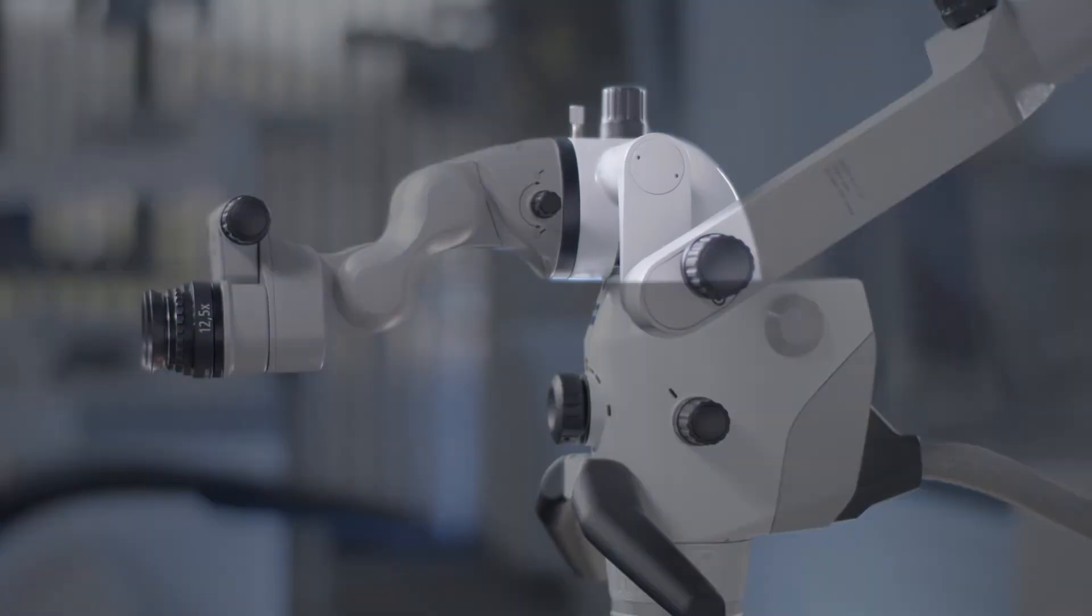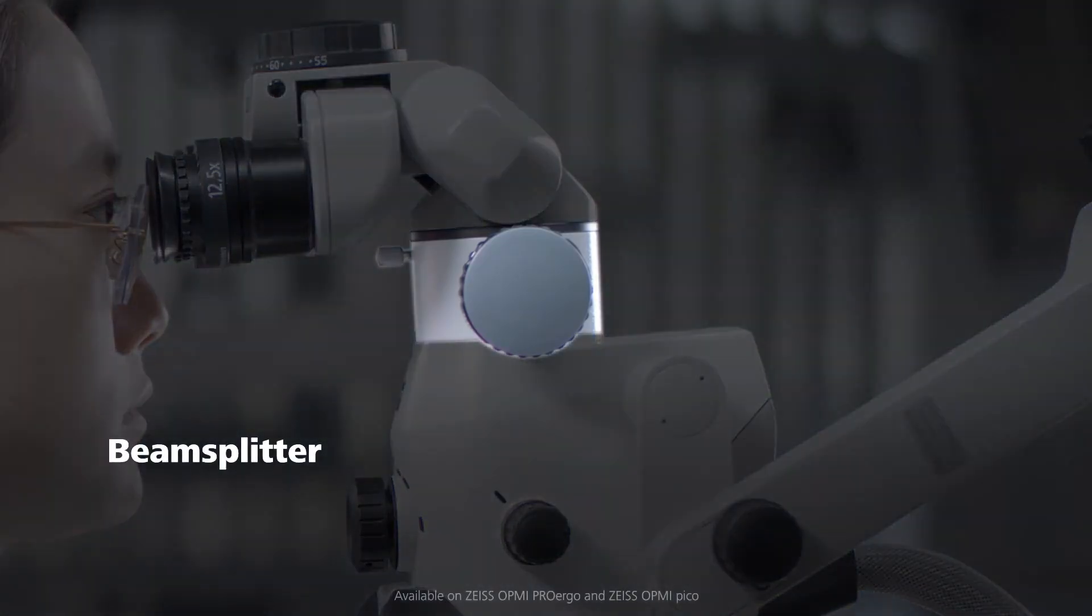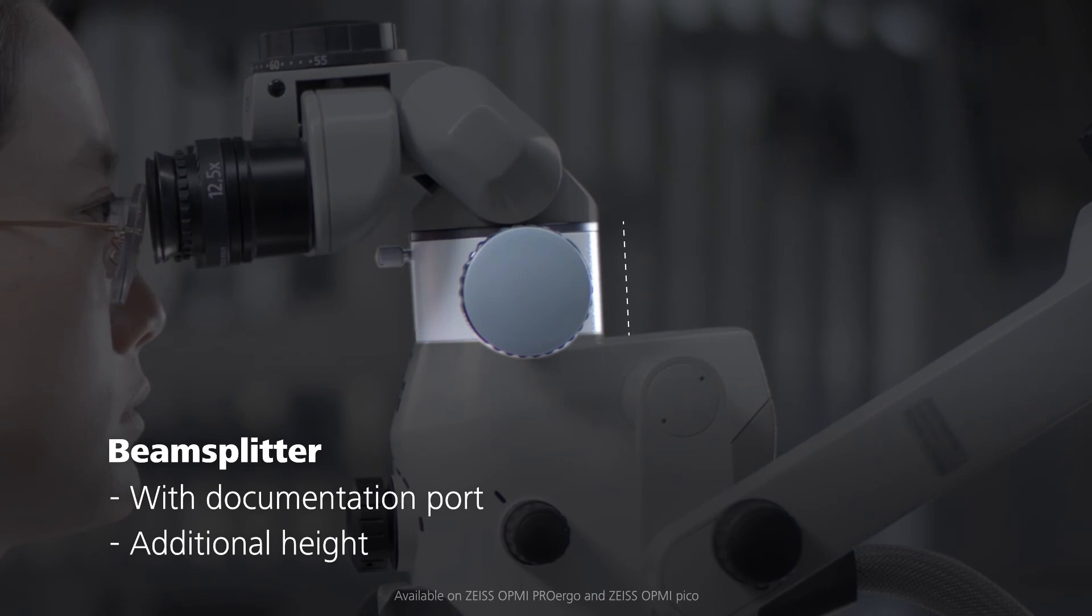The extender is placed between the microscope body and the binocular tube. The beam splitter provides a documentation port and can be used to attach an external camera to the microscope. Additionally, it adds length in the height.